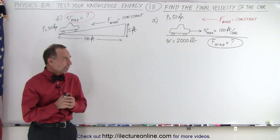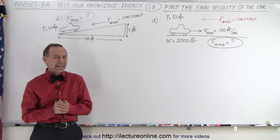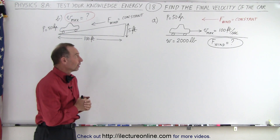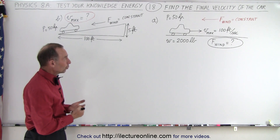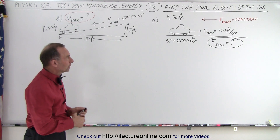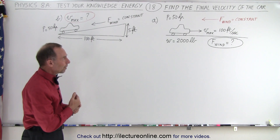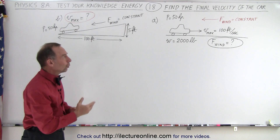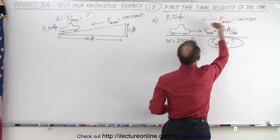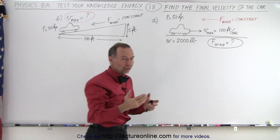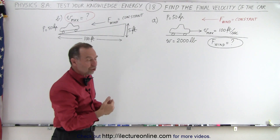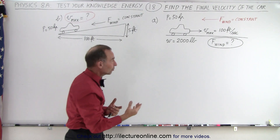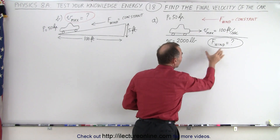Welcome to my lecture online. Here we have an interesting problem — it's a little bit tricky but there's actually a really good way to handle this. The problem starts as follows: when a car is driving on a level road, the engine puts out 50 horsepower, the weight of the car is 2,000 pounds, and driving into the wind, assuming the force on the car by the wind is a constant, the car will achieve a maximum velocity of 100 feet per second. We're going to find out what that force of the wind is equal to.